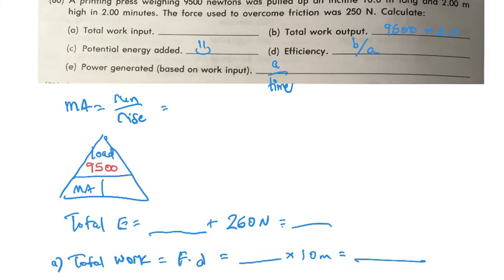All right, on this one it does give us the weight 9,500 newtons. Yay, we don't have to convert from kilograms to newtons on this one. We have an inclined plane 10 meters long and 2 meters high. So right away let's just calculate what would that mechanical advantage be. So the 10 over the 2, right, so that's pretty easy, that's 5. So we know that that's 5. We know the load is the 9,500, we can just take that, we don't have to calculate that.